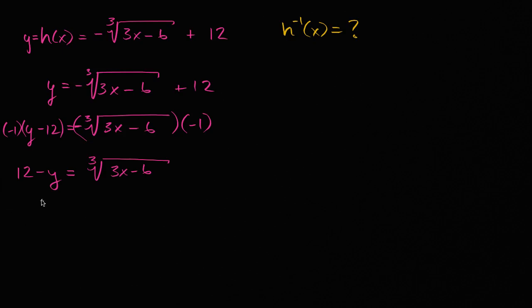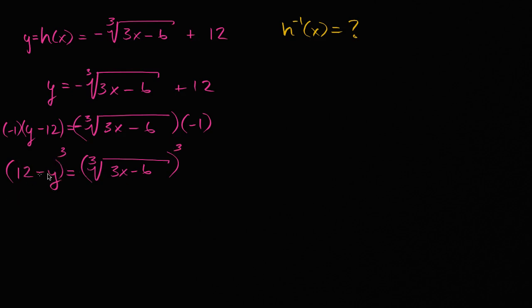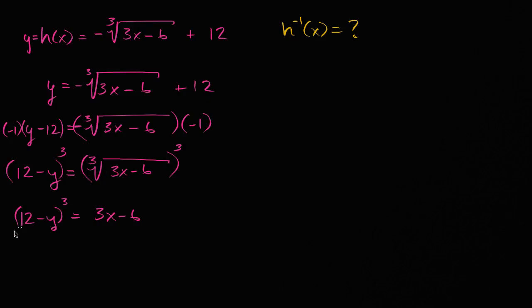Now — this is going to be a little bit algebraically hairy — we want to cube both sides. Actually, it doesn't get that algebraically hairy, because I don't have to expand it; I can just leave it as 12 minus y, cubed. So if we cube both sides, on the left-hand side we're just left with 12 minus y cubed, and on the right-hand side, you take the cube of the cube root and you're just left with what you originally had under the cube root sign.